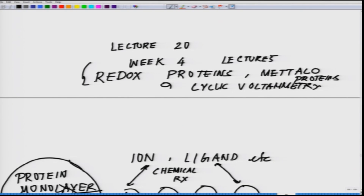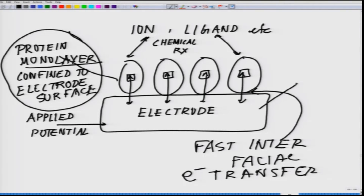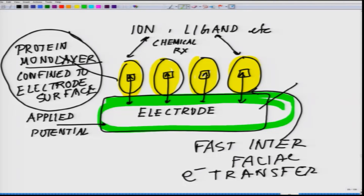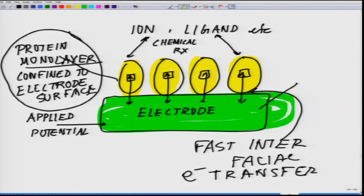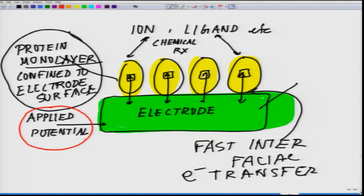This is the kind of strategy: you have a protein monolayer confined to the electrode surface, mostly using a gold electrode. These proteins are electrically active proteins — they have the power either to accept an electron or donate an electron. The green is showing your electrode surface; you are confining your protein on top of the electrode surface. You can apply a potential and either oxidize the protein or reduce the protein.